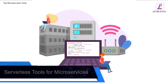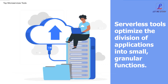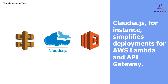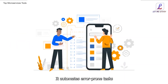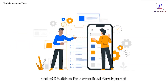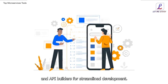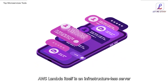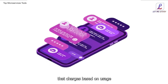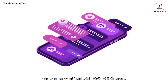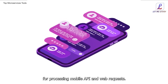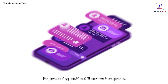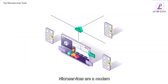Serverless tools for microservices optimize the division of applications into small granular functions. Claudia.js, for instance, simplifies deployments for AWS Lambda and API Gateway, automating error-prone tasks and providing builders and API builders for streamlined development. AWS Lambda itself is an infrastructure-less server that charges based on usage and can be combined with AWS API Gateway to serve user requests and create a serverless backend for processing mobile, API, and web requests.